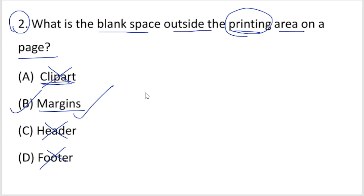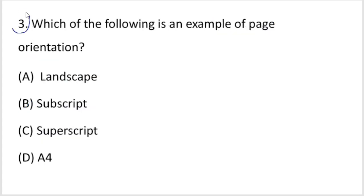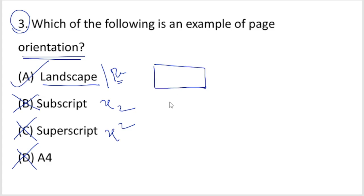Question 3: Which of the following is an example of page orientation? Page orientation refers to page size. Superscript and subscript are formatting options. Landscape and portrait are page orientations. Landscape and portrait - option A is the right answer.